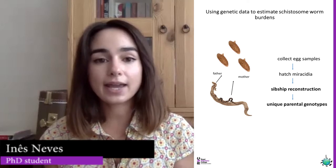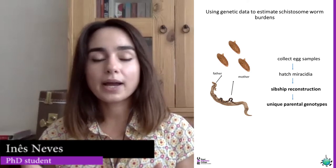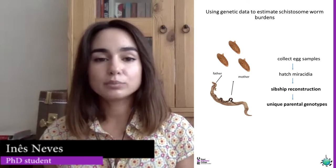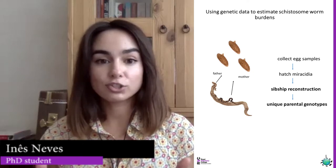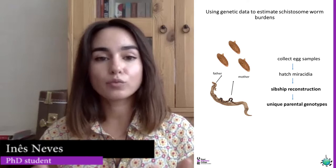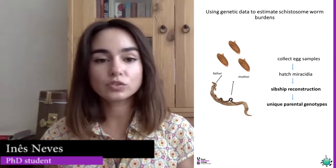It's really important to know how many worms are infecting individuals, and the more worms you have, the more you contribute to disease transmission. We cannot collect the worms directly since they live inside the blood vessels. But we can collect the eggs expelled to the external environment, and by analyzing the genetic data of the eggs and the sibling relationships between them, we can reconstruct their parentage and estimate the number of worms using sibship reconstruction.